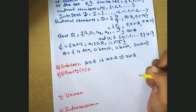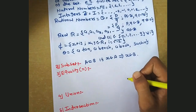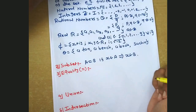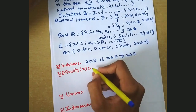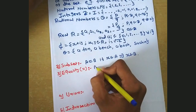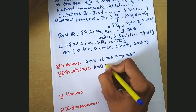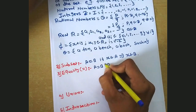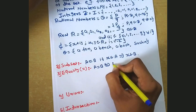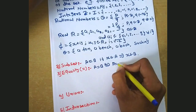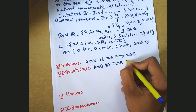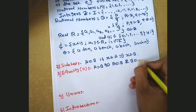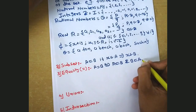The third definition is equality. What is equality? A is equal to B — we can say that A is equal to B if and only if A is a subset of B and B is a subset of A.